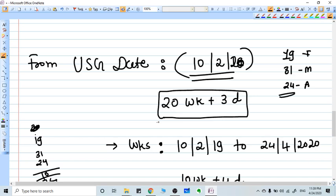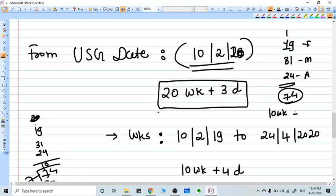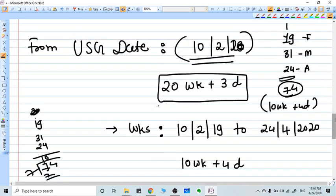So you total this all: 19 plus 31 plus 24 of April. So we have to convert the 74 days into weeks. So it becomes 10 weeks plus 4 days.